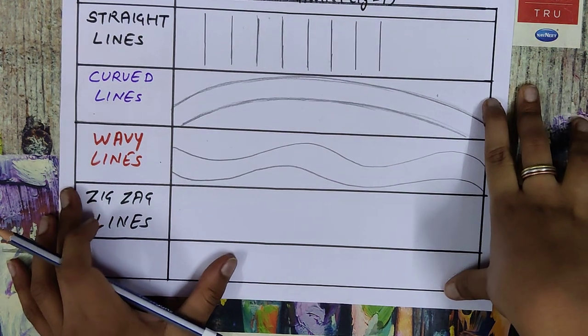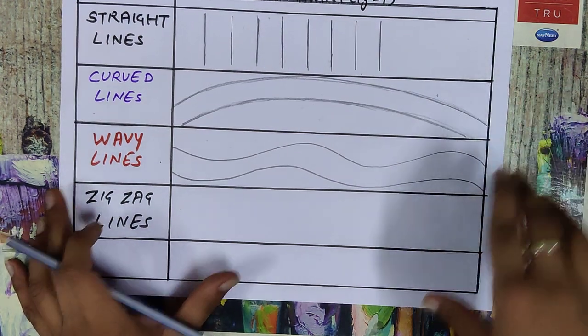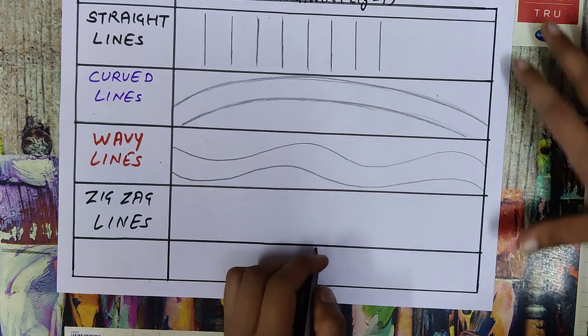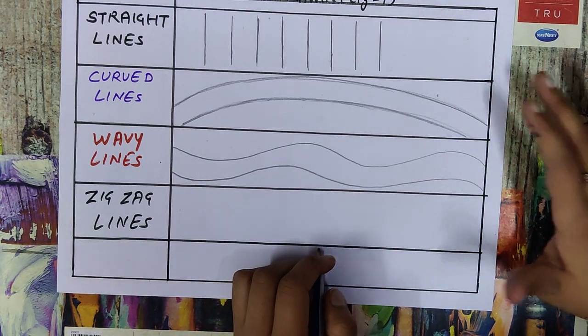So next line is zigzag line. In zigzag line you have to draw a zigzag pattern like this.